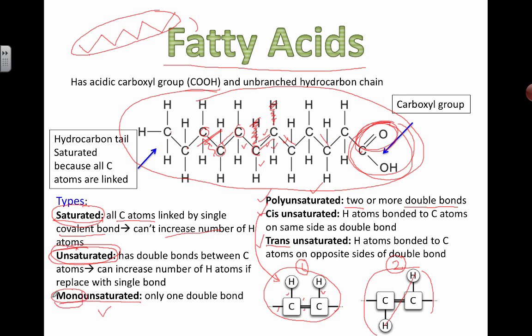We can add a counter in front. Mono means there's only one double bond. Polyunsaturated means there's more than one or two or more double bonds. And then cis and trans describe the types of double bonds that are actually there.